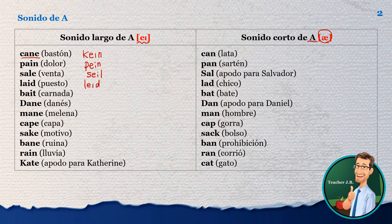Carnada is 'bait.' Bait, bait. So Danish — Danish people — it sounds 'Dane,' Dane. And Malena — that's 'main,' main. And kappa — that's 'cape.' Cape. It's not kappa, that's cape.